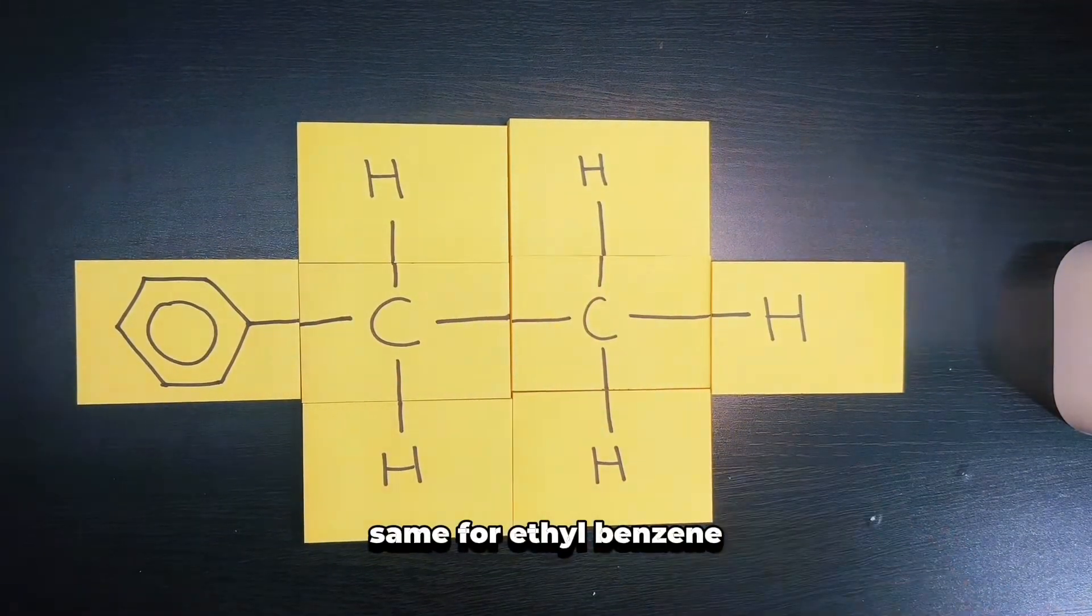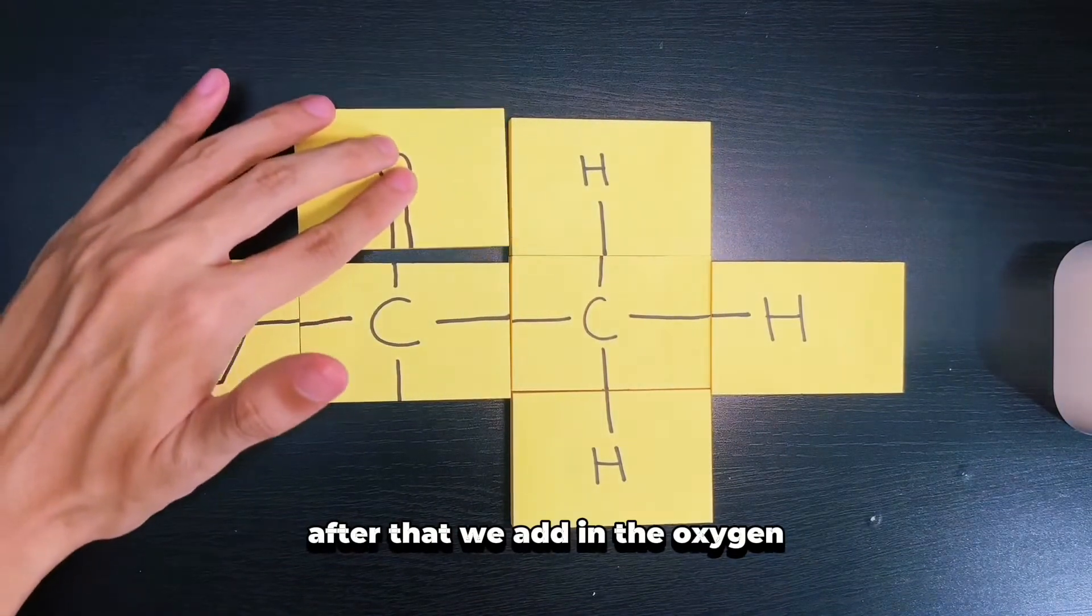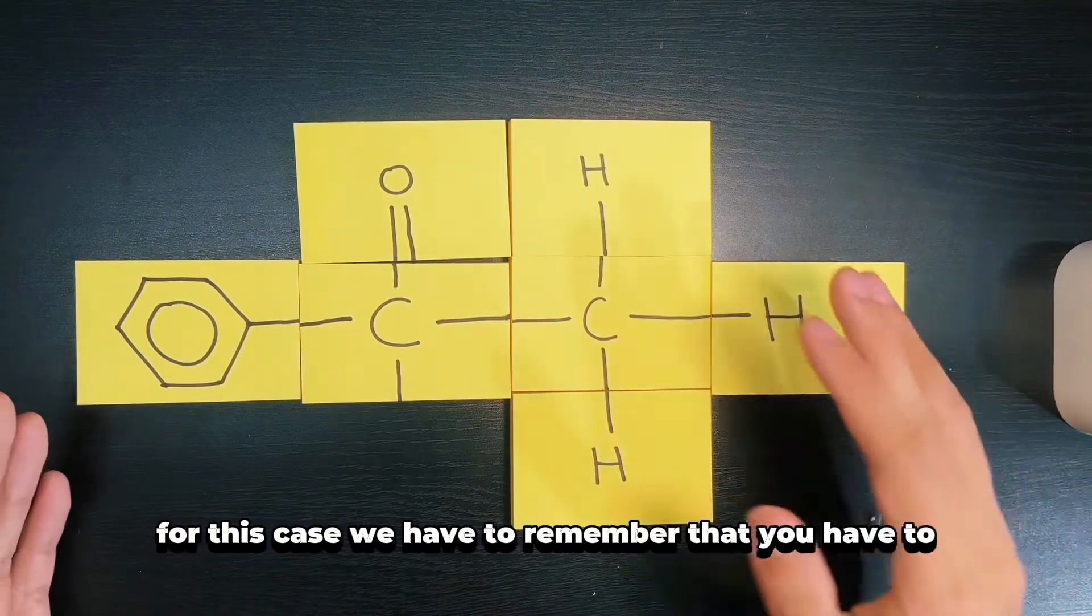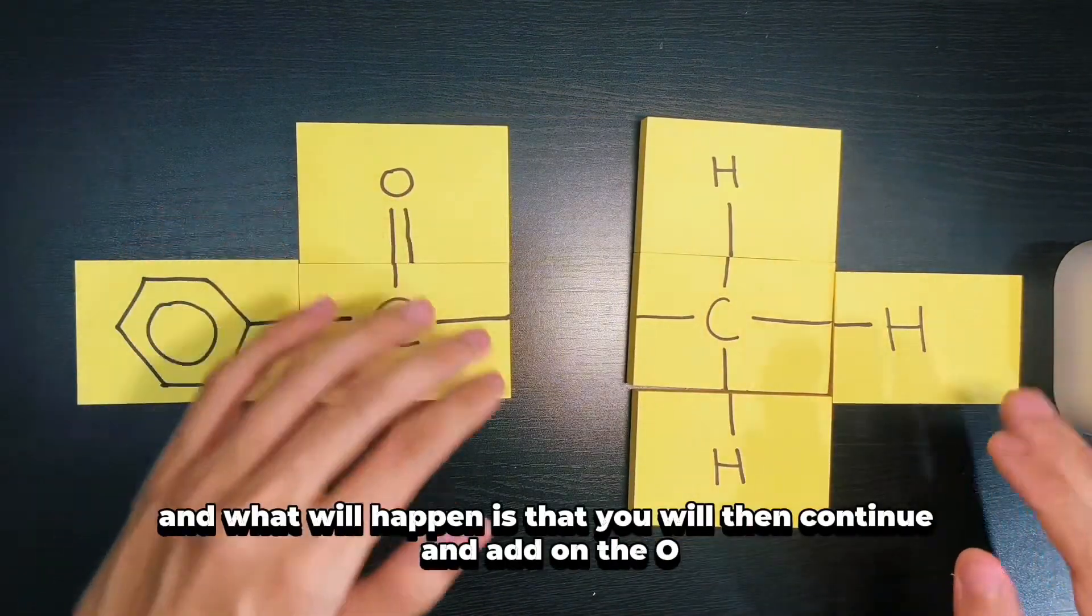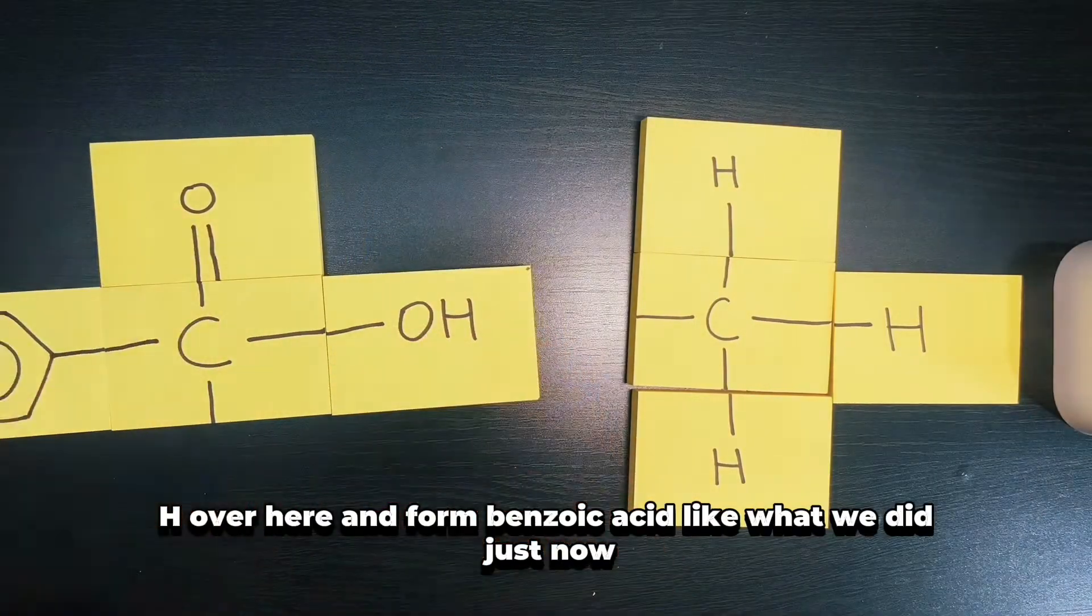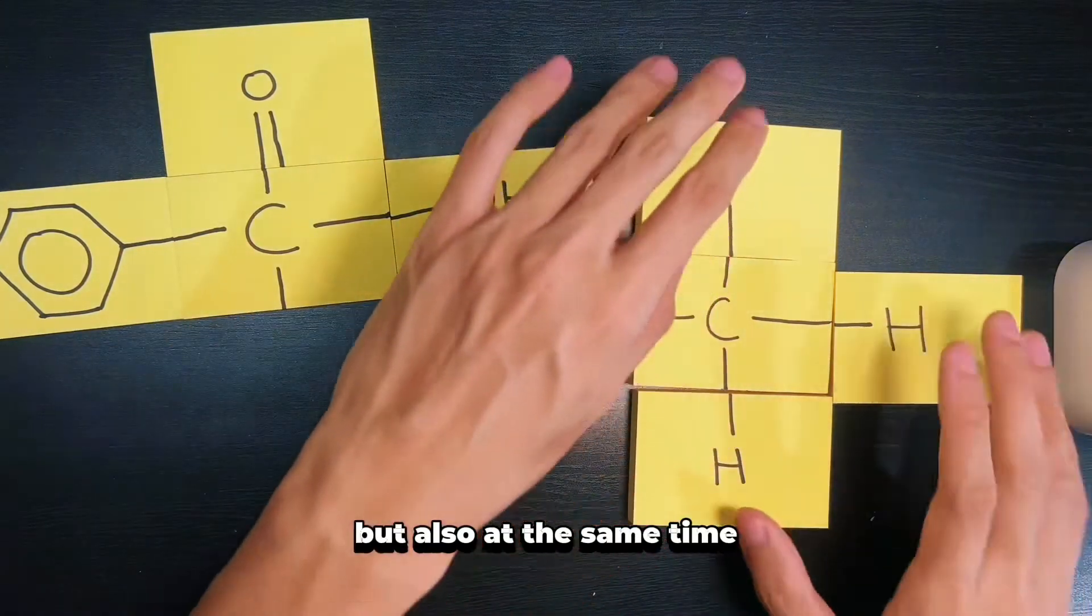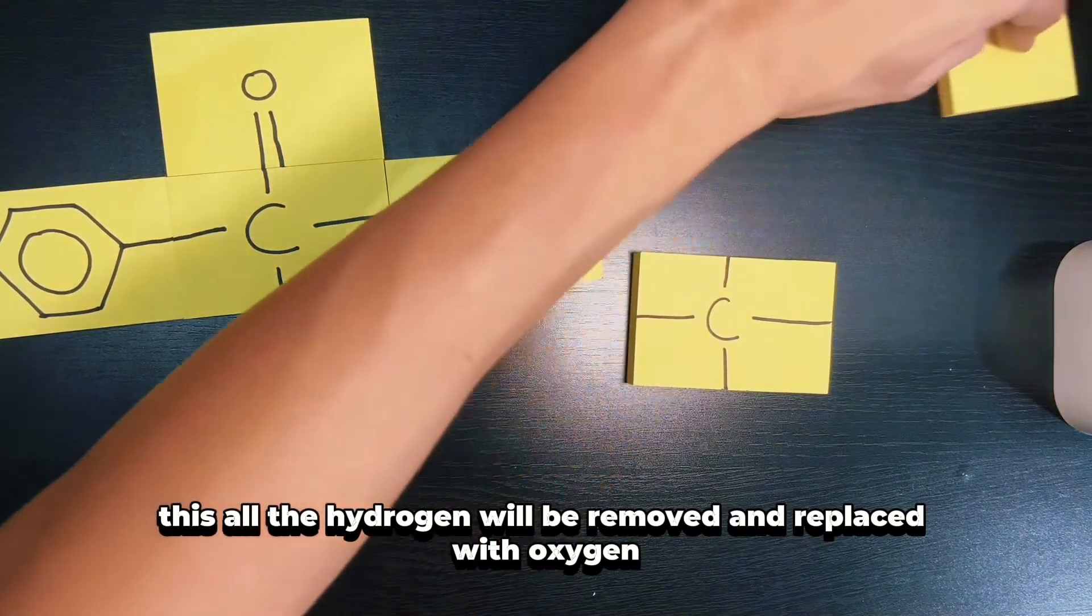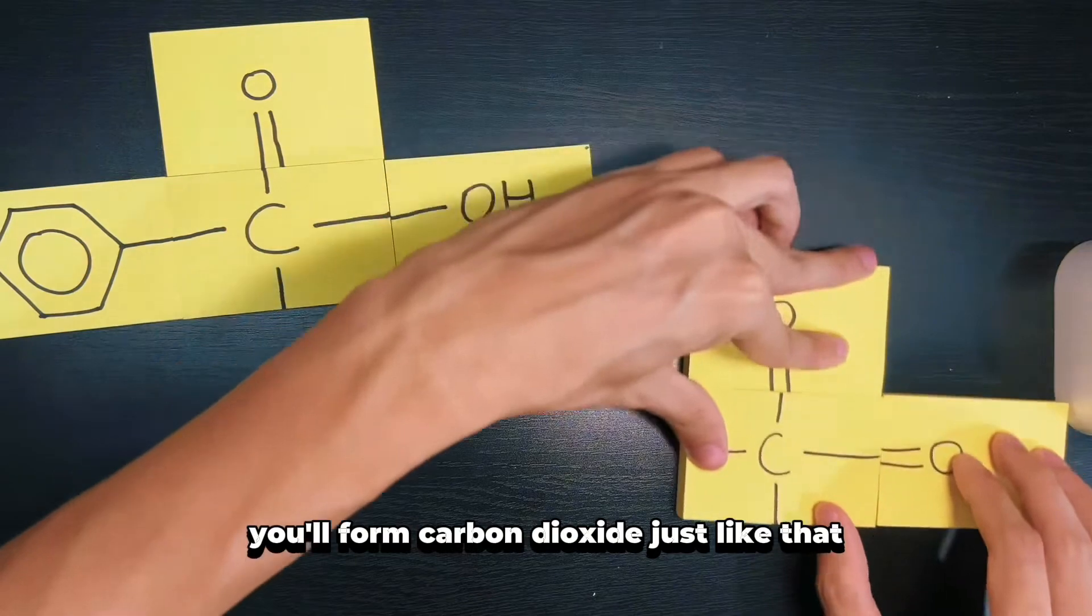For ethyl benzene, we remove the hydrogen and add in the oxygen. For this case, we have to get rid of this excess carbon over here. You will then continue and add on the OH here and form benzoic acid, but also at the same time all the hydrogen will be removed and replaced with oxygen to form carbon dioxide.